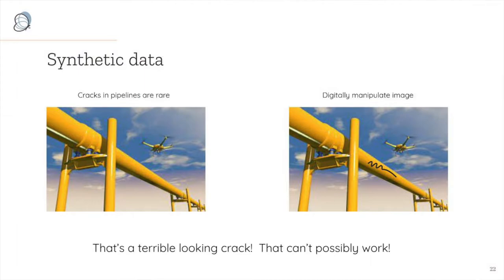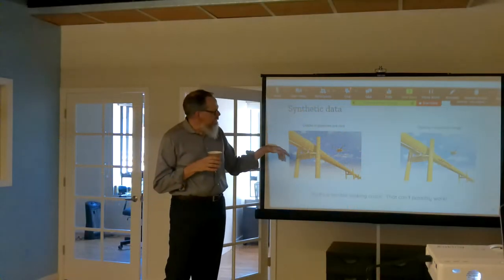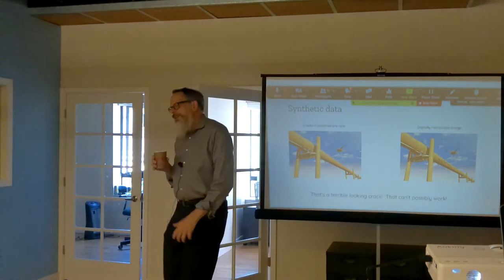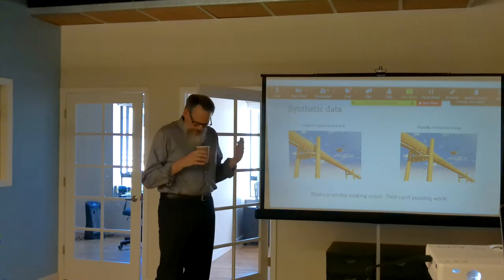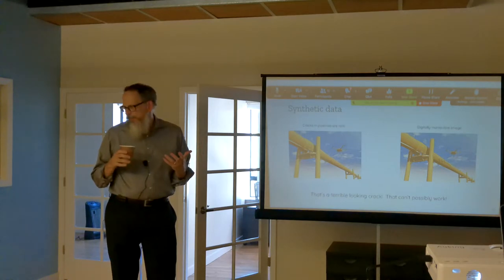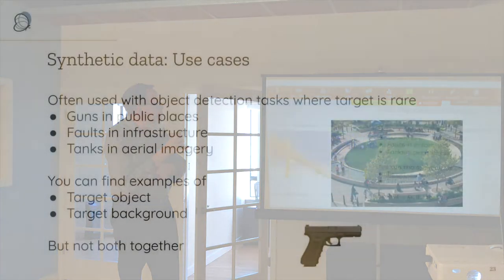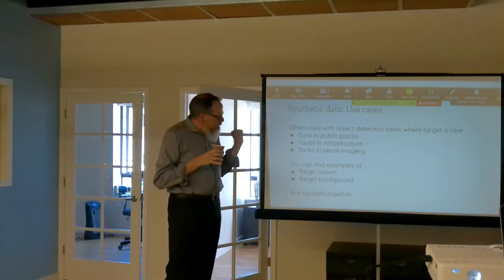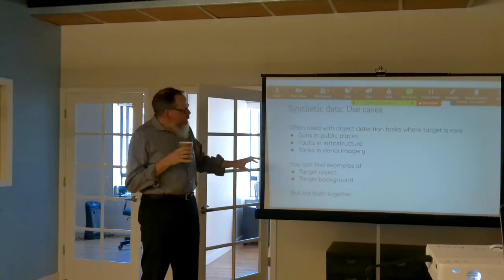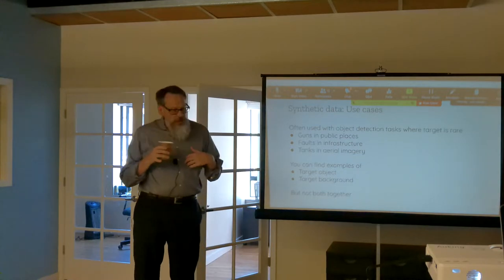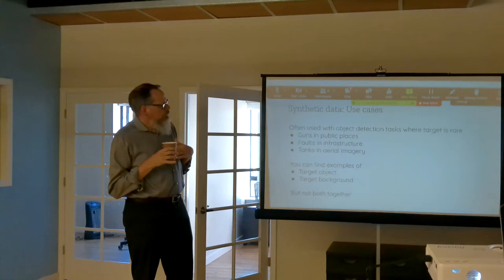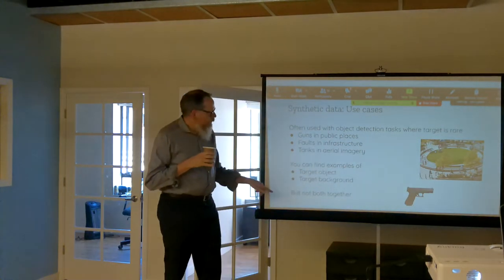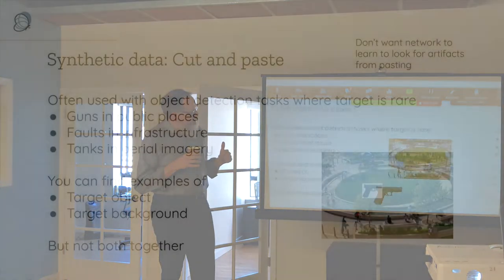The last method in this category is synthetic data, which has a lot of subtlety. For example, if I'm looking for cracks in pipelines, I can draw in a crack — but that won't work because it doesn't look like a real crack. There are many use cases like detecting guns in public places, faults in infrastructure, or tanks in aerial images. You can find plenty of examples of the target object and plenty of background images separately online, but it's hard to find both together in a natural setting.